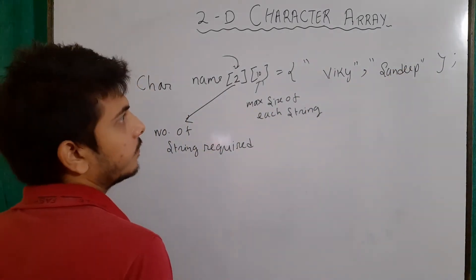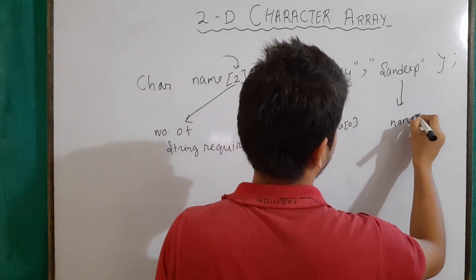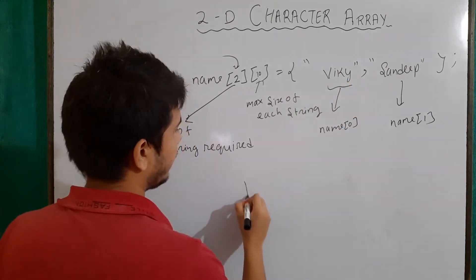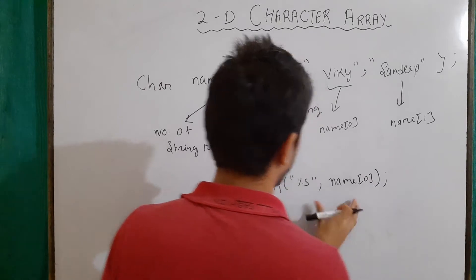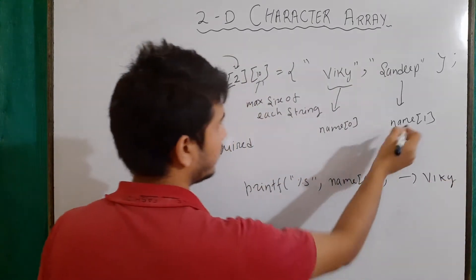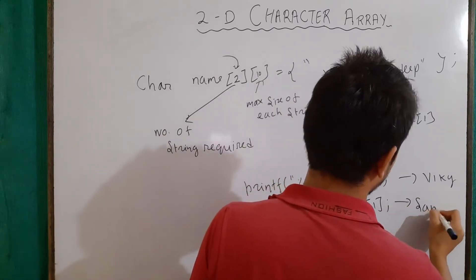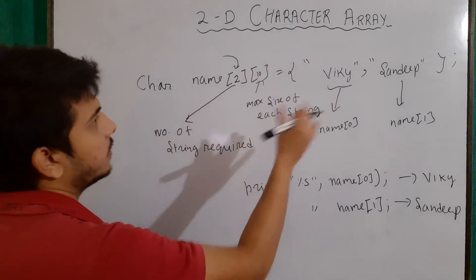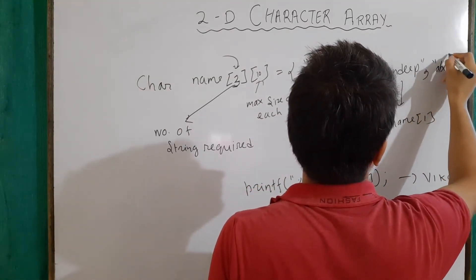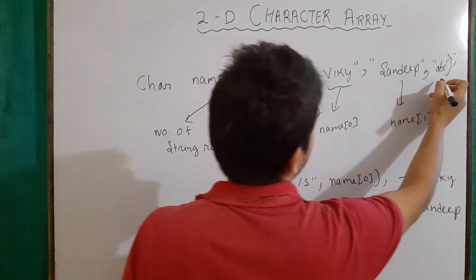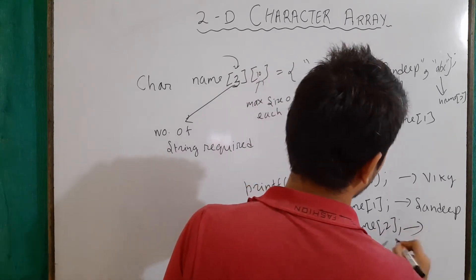These two strings belong to name[0] and name[1] respectively. If I want to print 'wiki', I will do printf("%s", name[0]) and the output will be 'wiki'. If I want to print 'Sandeep', I will write name[1] and the output will be 'Sandeep'. If there is a third string, say 'abc', with number of strings set to three, then I can access it using name[2] and it will give me 'abc'.